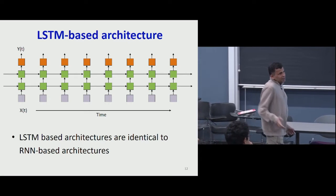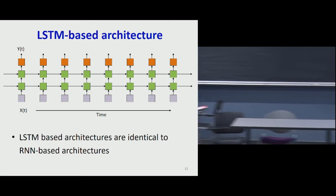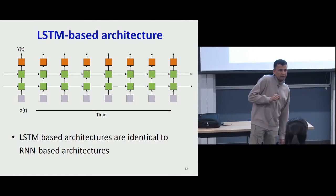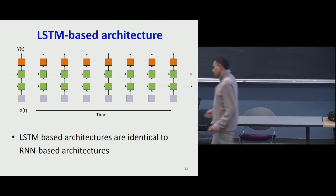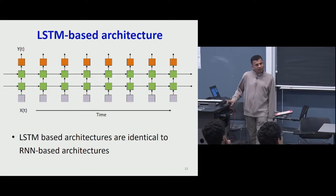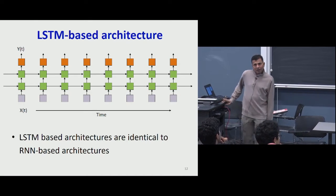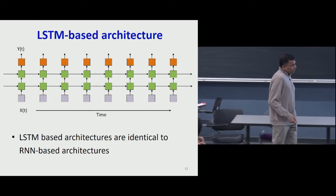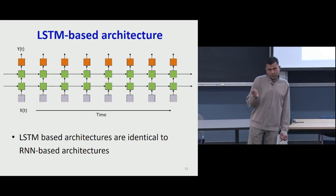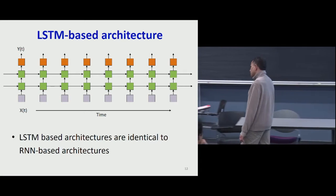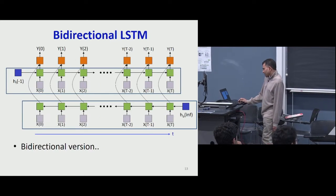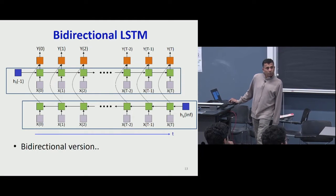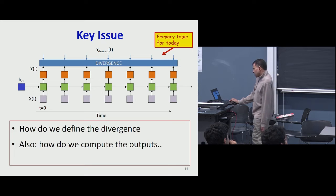LSTM-based architectures look just like regular recurrent neural network architectures, except that the little green boxes representing hidden states in your RNN are now each individually an LSTM cell. Once we make this modification and abstract these things out to being LSTM cells, they just look like any other recurrent architecture. Even in terms of implementation, it didn't make a tremendous difference to your code. These networks can be used in recurrent architectures just as standard RNNs — you can have a left-to-right analysis, or even bidirectional versions where any input is analyzed going both forward and backward before deciding the output at each time.